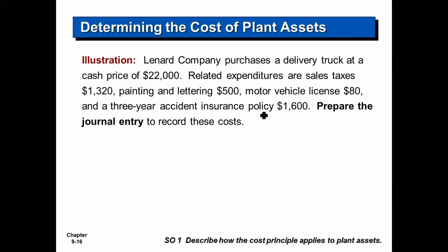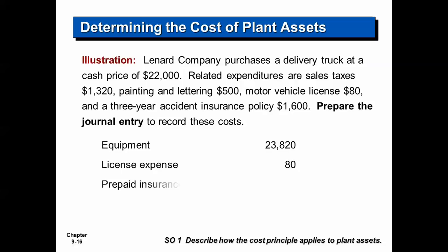The journal entry would be: debit Equipment $23,820 (the $22,000 plus $1,320 plus $500), debit License Expense for $80, debit Prepaid Insurance for $600, and credit Cash for the total.